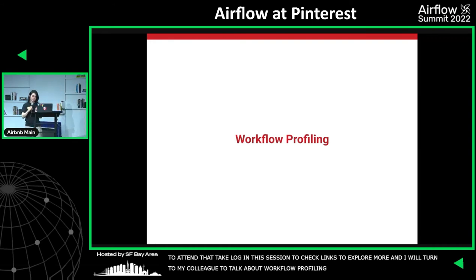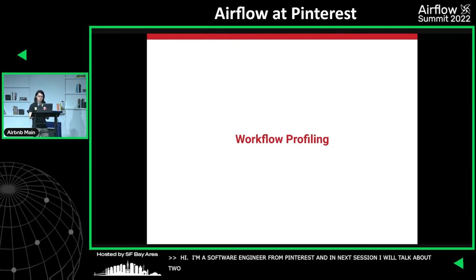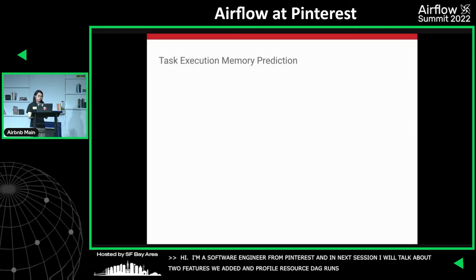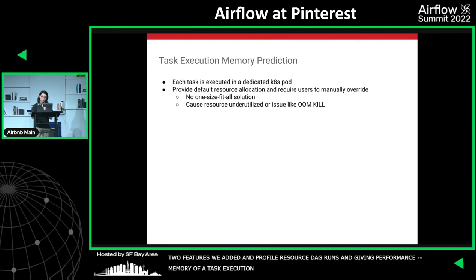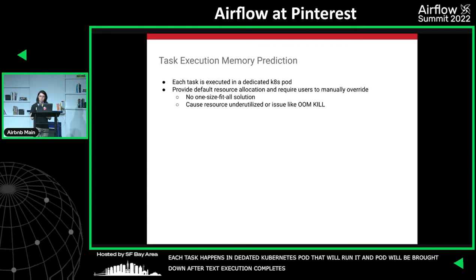Hi everyone, my name is Yule, a software engineer from Pinterest. I'm going to demonstrate two features we added to our infra on top of Airflow to profile the resource consumption of DAGs. The first feature is predicting memory consumption of a task execution. In our infra setup, each task executes inside a dedicated Kubernetes pod. The executor launches a pod for each incoming task, and the pod is brought down after task execution completes.